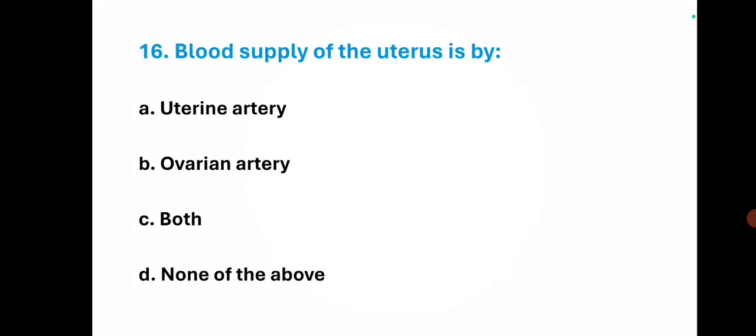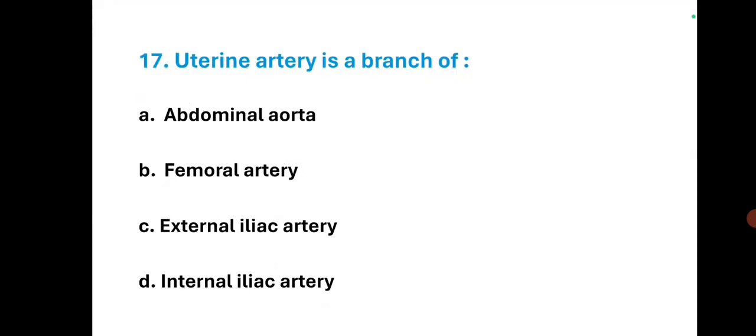Blood supply of the uterus is by — the right option is C — both uterine artery and ovarian artery. Uterine artery is a branch of — the right option is D — internal iliac artery.